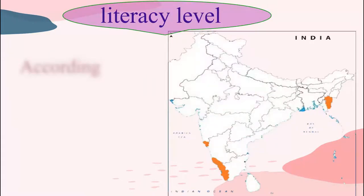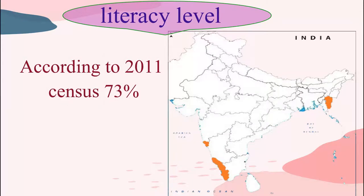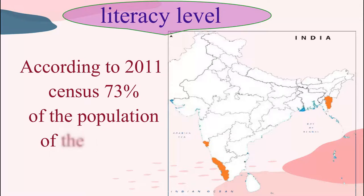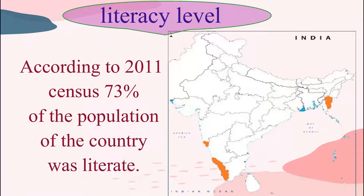According to the 2011 census, 73% of the population of the country was literate. The states having the highest literacy rate in India are Kerala, Mizoram, and Goa.